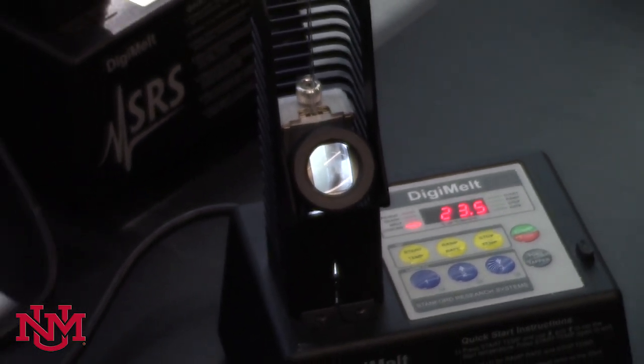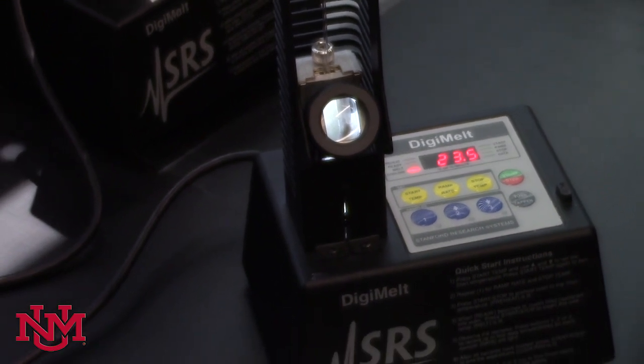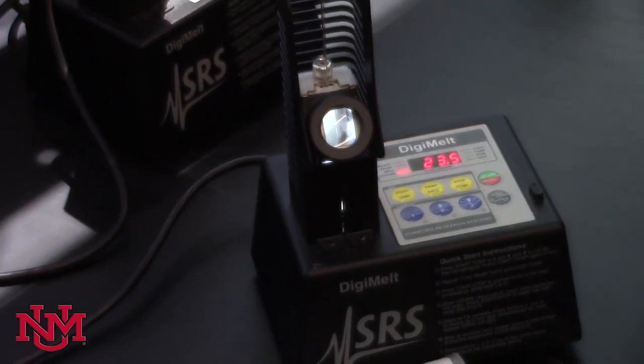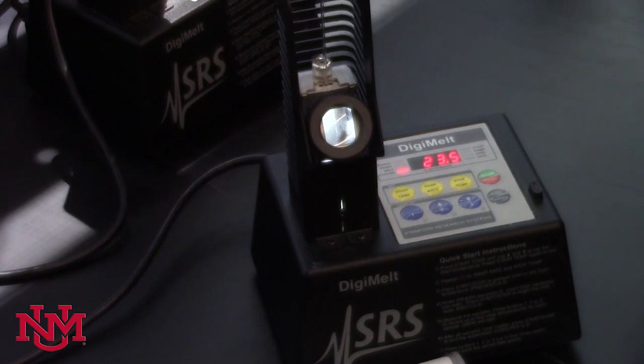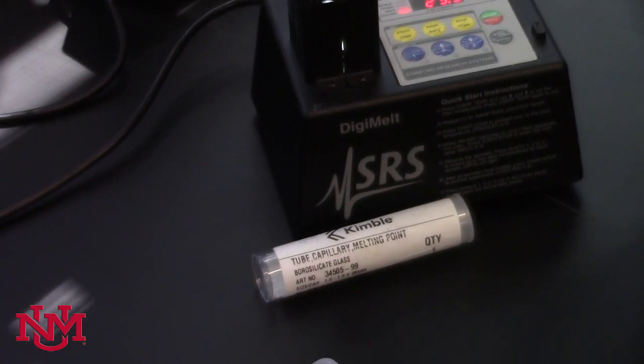Once you've completely finished with the instrument, you'll need to turn it off by turning off the power button in the back. And all of your samples that were in the three slots, if you took more than one, need to go into the broken glass.